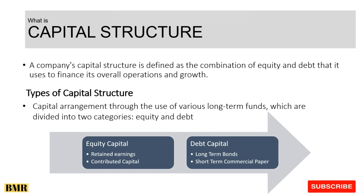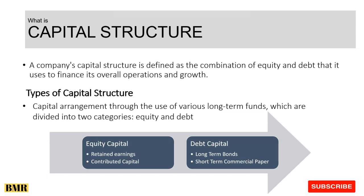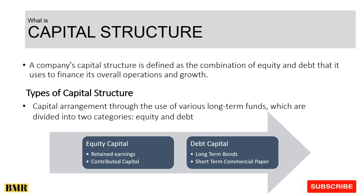Then comes debt capital, which is the borrowed money utilized in the business. It has two types: number one, long-term bonds, and number two, short-term commercial paper. Long-term bonds are considered to be the safest because you have an extended repayment period — you pay the interest and the final principal amount at the time of maturity. Short-term commercial paper is the kind of debt you use when you need money for a shorter period of time.